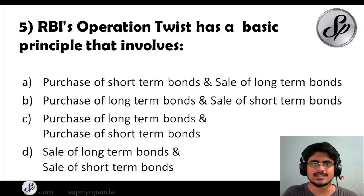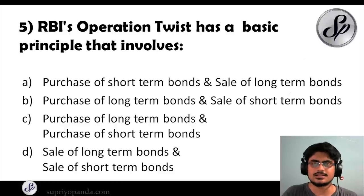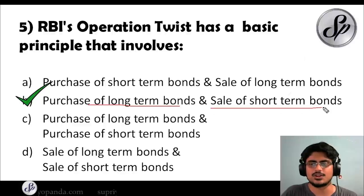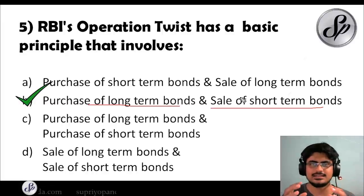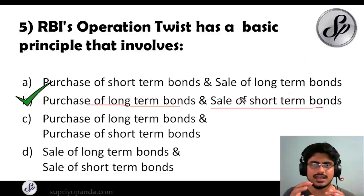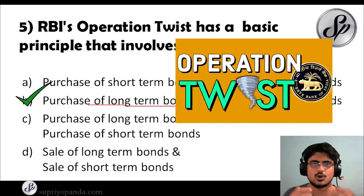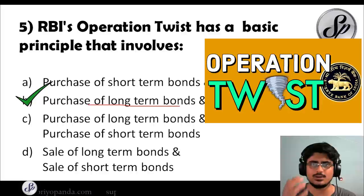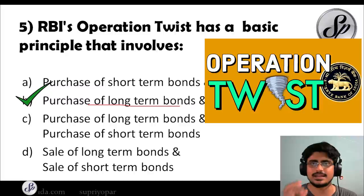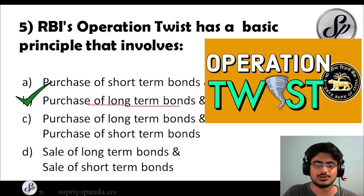Question five: RBI's Operation Twist has a basic principle that involves what? The answer is purchase of long-term bonds and sale of short-term bonds. Operation Twist is something that the RBI has actually borrowed from the ECB, the European Central Bank. I have made a full video about Operation Twist — it is a very important topic for the 2020 examination.